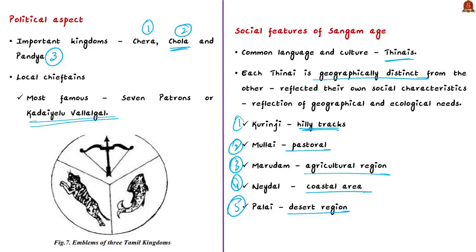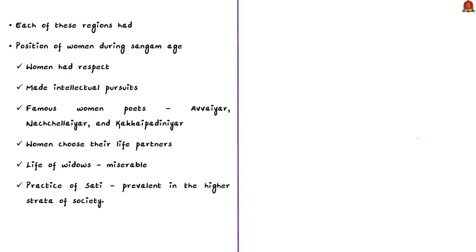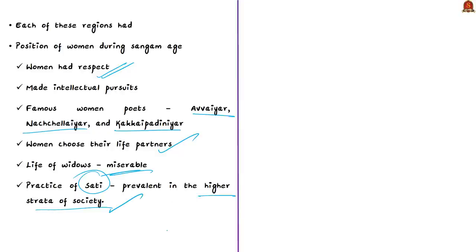It is also important to know the position of women during the Sangam Age. Women had respect and made intellectual pursuits — there were famous women poets such as Avvaiyar, Nachaliyar, and Kakkaipadiniyar, who contributed to Tamil literature. Women also chose their partners in this age, but the life of widows was miserable, and there is mention of the practice of Sati prevalent in the highest strata of society during this Sangam Age. This concludes the discussion on the Sangam Age, its literature, kingdoms, and social features.